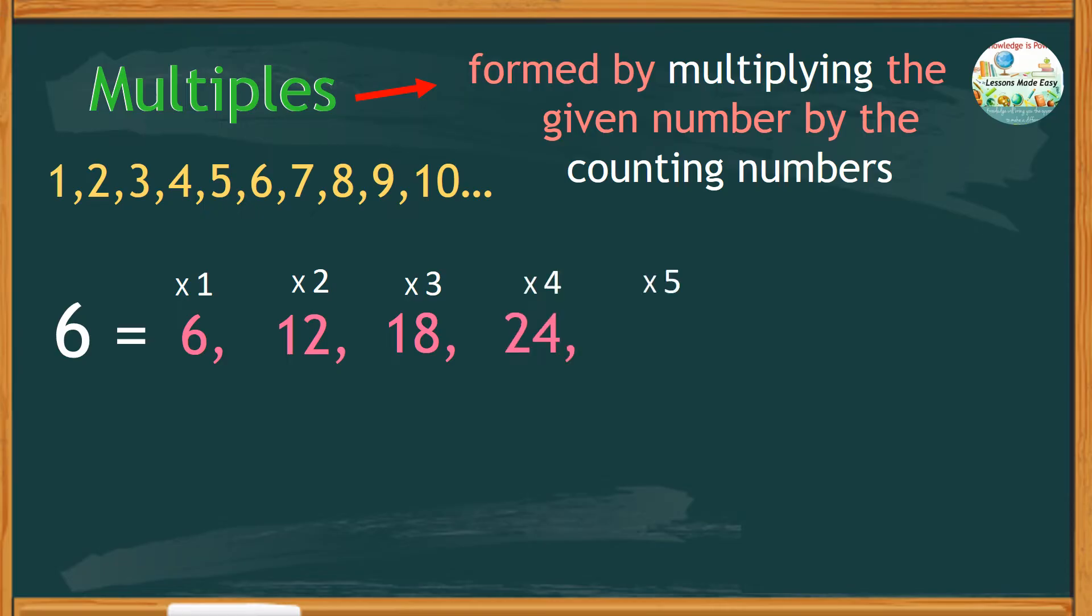6 times 5 equals 30, 6 times 6 equals 36, 6 times 7 equals 42, 6 times 8 equals 48, and so on.